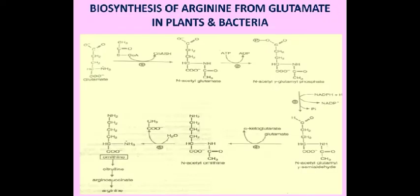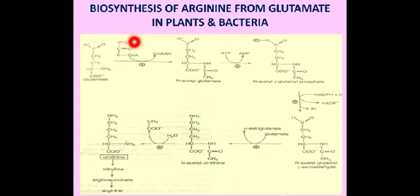Now, biosynthesis of arginine from glutamate in plants and bacteria. The biosynthesis of arginine in bacteria starts with blocking the alpha-amino group of glutamate. The alpha-amino group is blocked by acetyl coenzyme A because it plays a very important role in cyclization, and the blocked alpha-amino group is not able to cyclize. An acetyl coenzyme A is used to block this alpha-amino group, and the enzyme is N-acetylglutamate synthase.